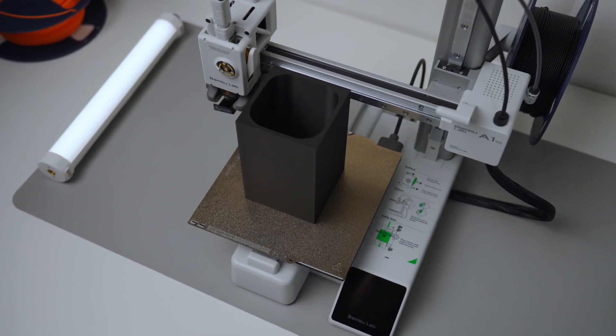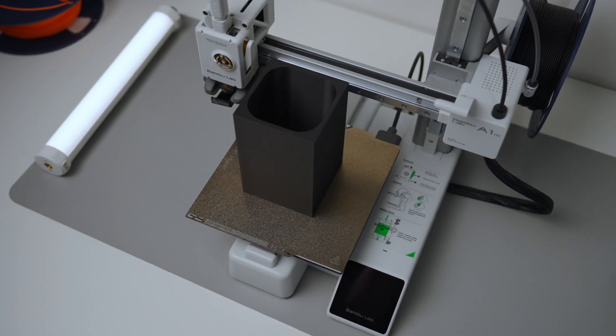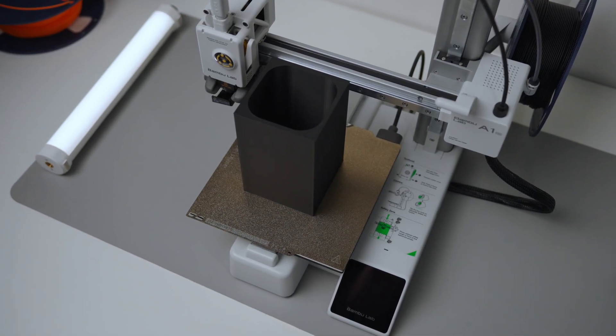And even if it's not enough print space, in the Bamboo software you can actually slice your models so you can add connectors to them by default. It's built into the Bamboo software. So if you have a model bigger than seven inches, you can actually print it in multiple parts and then just connect it later.